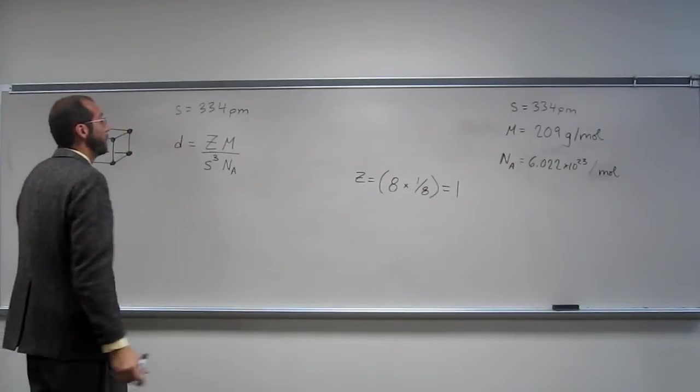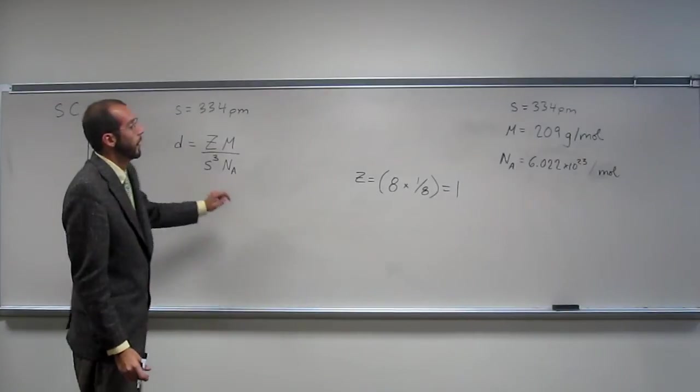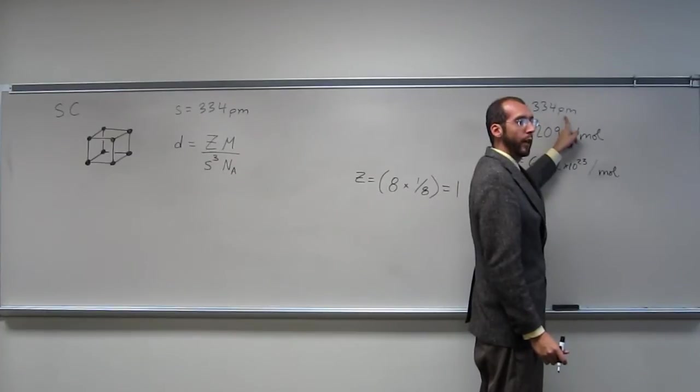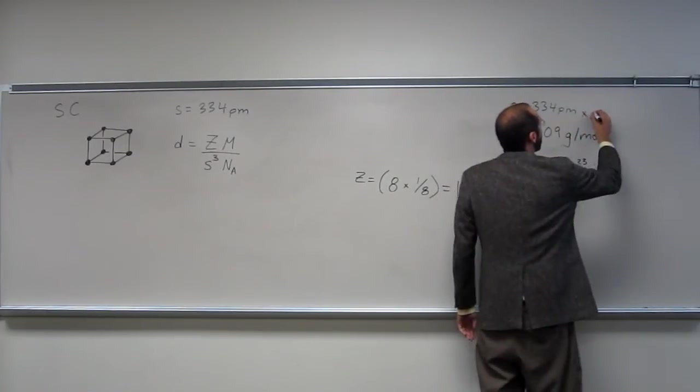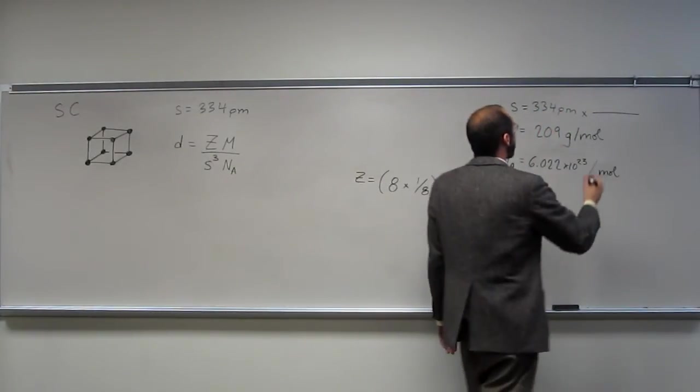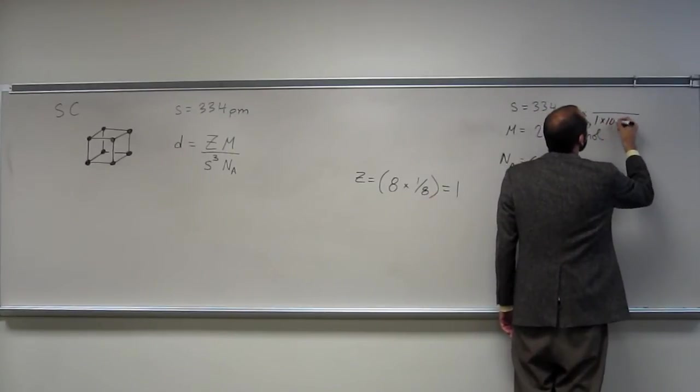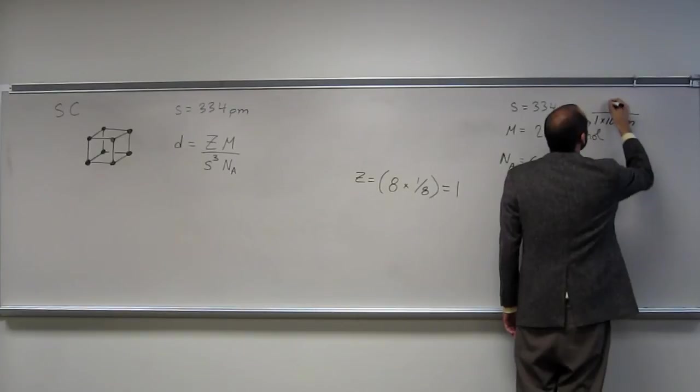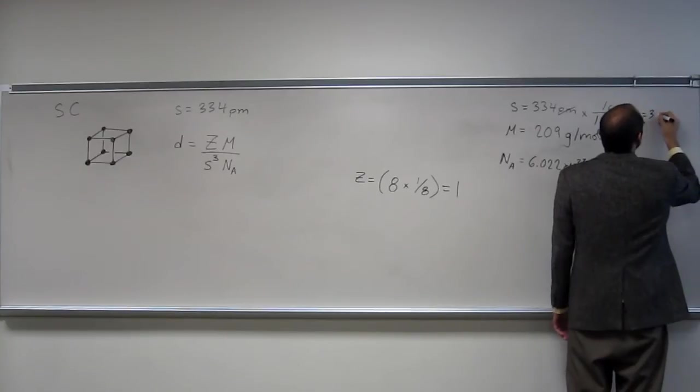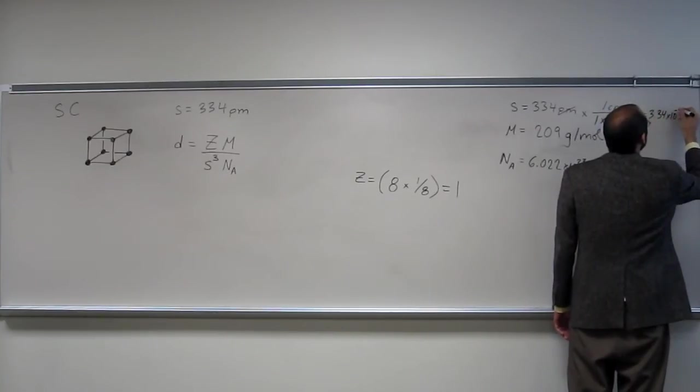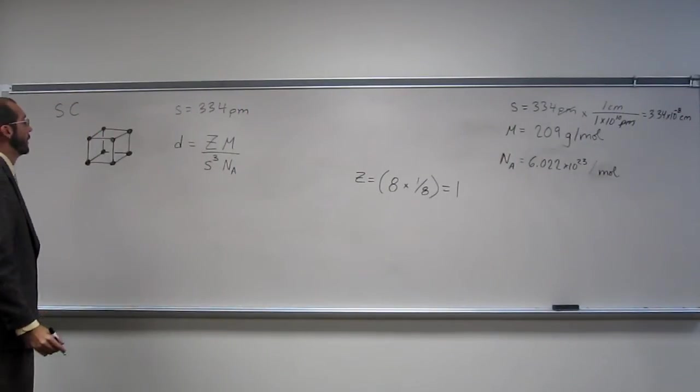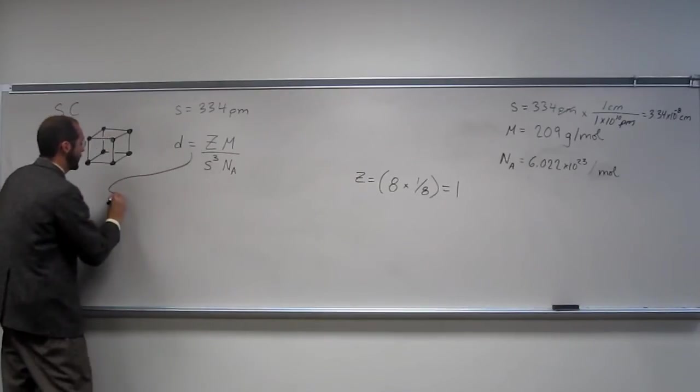So, now it's just a matter of plug and chug. The only thing you've got to remember is, this is in picometers, and it wants it in centimeters. So, a good conversion for you guys to remember, just so you don't have to do this every time, because you convert from picometers to centimeters quite a bit, is one times ten to the tenth picometers is one centimeter. So, it's 3.34 times 10 to the negative eighth centimeters.